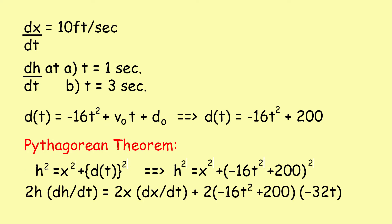By differentiating this equation, we get 2h(dh/dt) equals 2x(dx/dt) plus 2(minus 16t squared plus 200)(minus 32t). This leads to h(dh/dt) equals x(dx/dt) plus 512t cubed minus 6400t. We'll use this as the general equation.